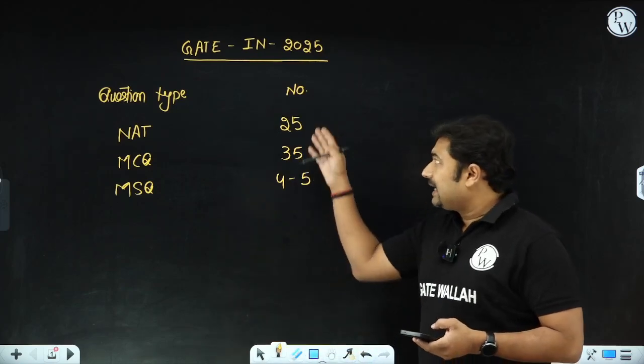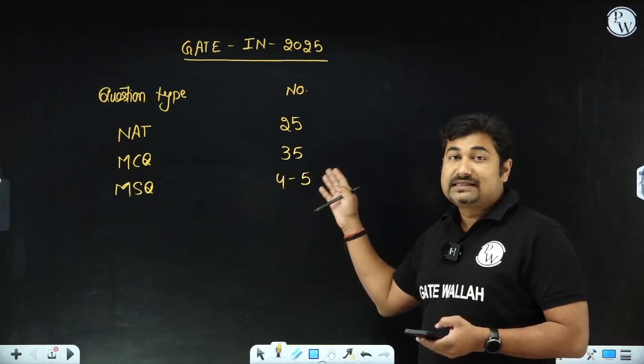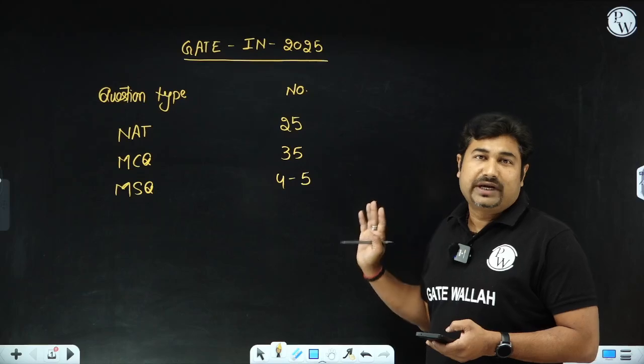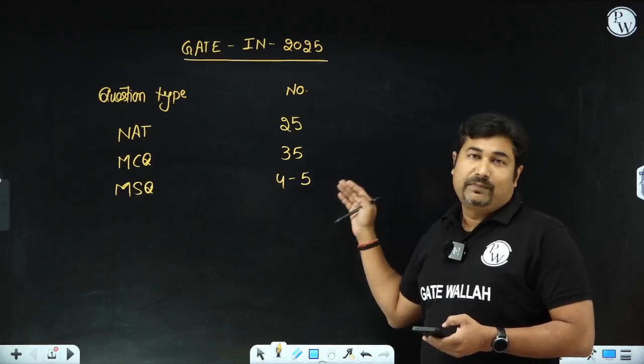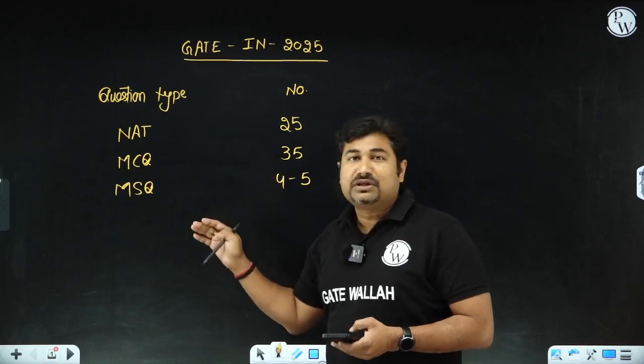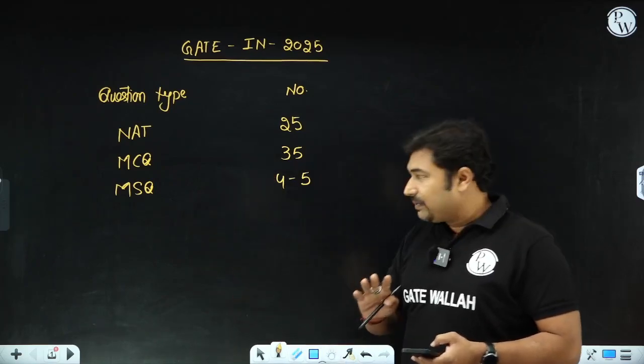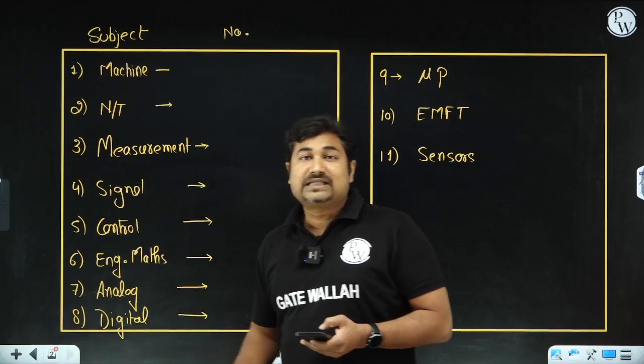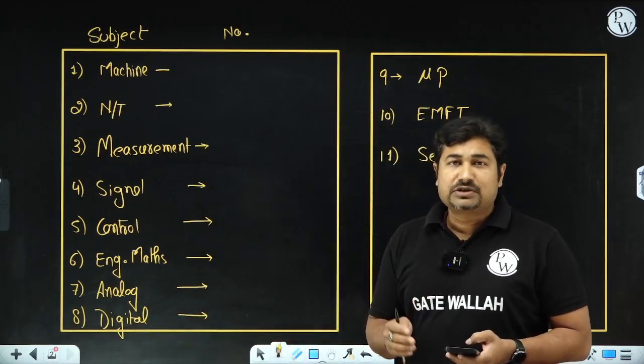This shows how the balance is done in GATE 2025 for the overall paper. The number of NAT, MCQ and MSQ, the frame is very good. So the paper is a balanced one. Difficulty level is also moderate type.